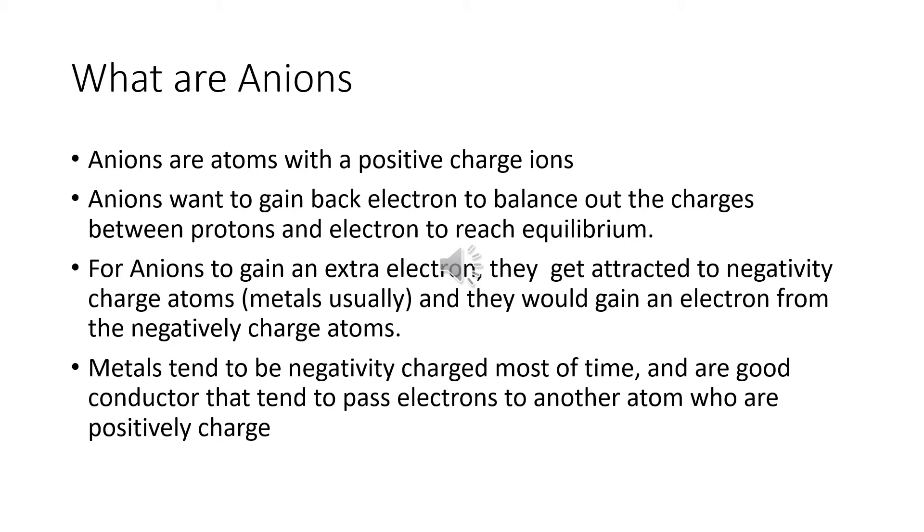To start off, what are anions? Anions are atoms with a positive charge. Anions want to gain back electrons to equalize their charge, basically make sure protons and electrons are equal in number just to make it neutral charge. In order for anions to gain their electrons back, they get attracted to negatively charged atoms. Metals usually are negatively charged, and they will gain electrons from the metal, which have extra electrons that the metals don't want to have.